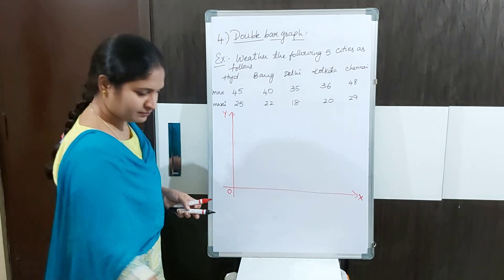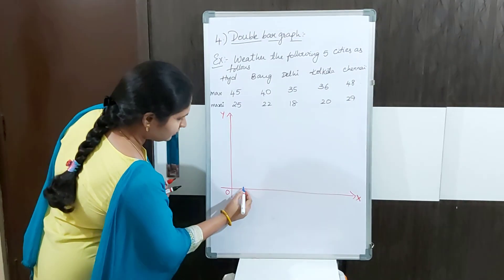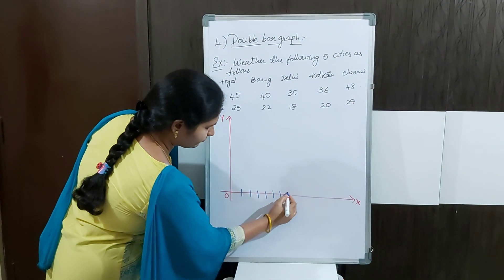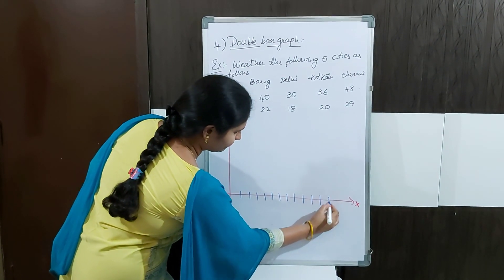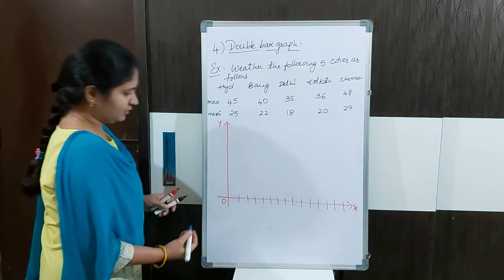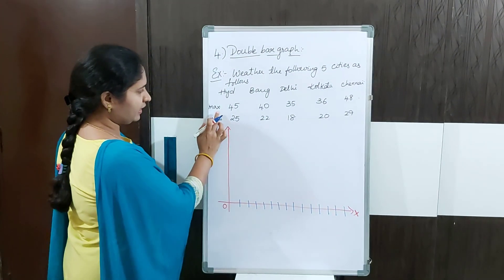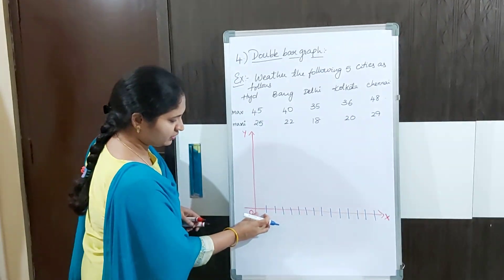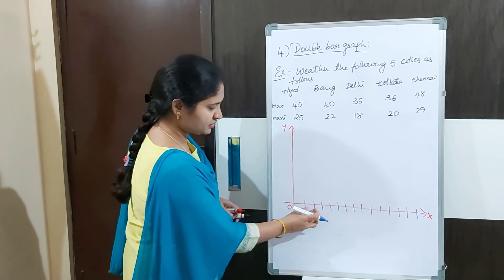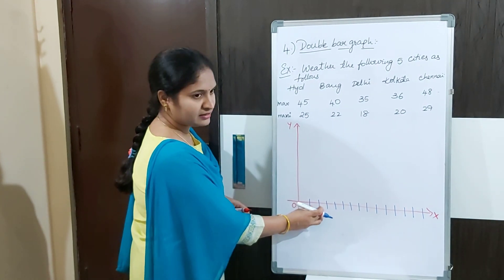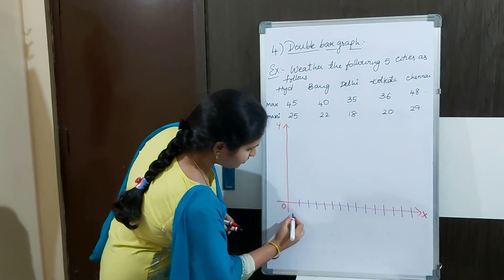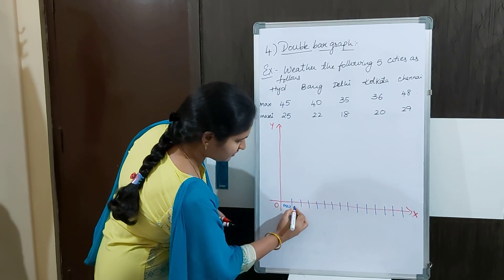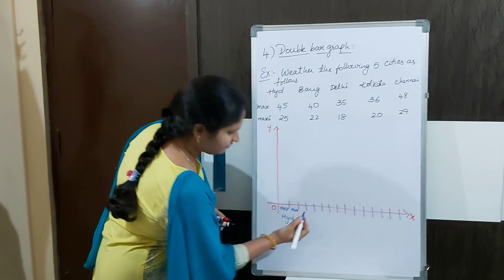The origin I am representing here. I am representing both maximum and minimum temperature on the same graph. So one bar I am taking for maximum temperature and another bar for minimum temperature. For the city Hyderabad, we need one box for maximum temperature and one box for minimum temperature.